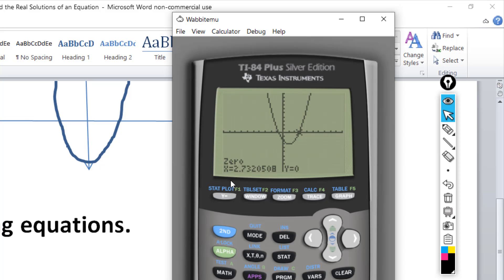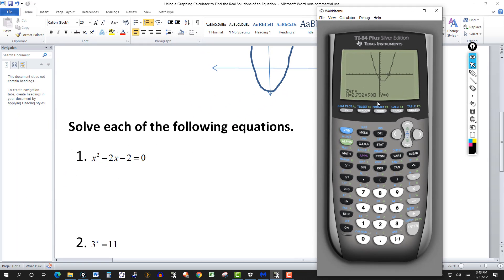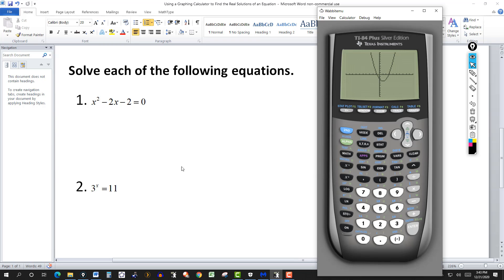2.732. Run it out to three places. So again, we have one real solution of -0.732, and a positive 2.732. Clear this. Go to the next one.